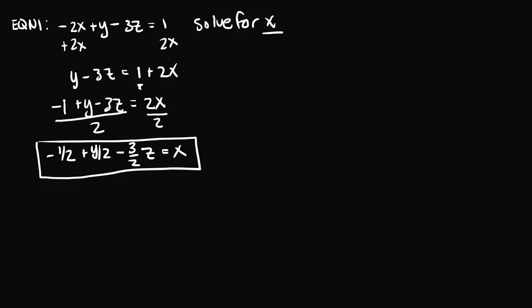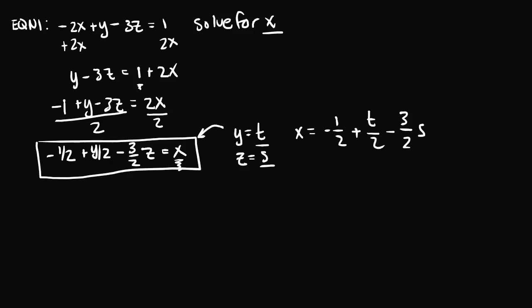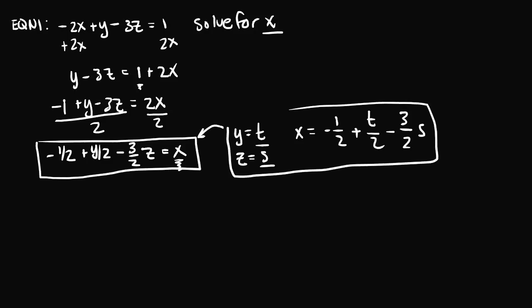Notice that y and z can take on any value. For example, if y and z were both 0, then x would be negative one-half. Since y and z can be anything, we can choose parameters to represent them. Let y equal t and z equal s, where t and s are arbitrary characters representing any real number. Plugging in gives x equals negative one-half plus t over 2 minus three-halves s. This is the parametric representation of the solution set, describing all the many different solutions.